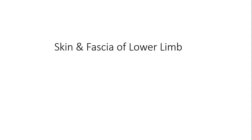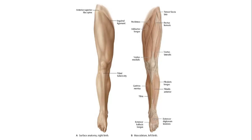The skeletal system will be discussed by another teacher. I am here to discuss the skin and fascia of the lower limb. The skin of the lower limb is similar to other parts of the body, but at certain points it is different. At the sole of the foot it is much harder and thicker compared to other parts of the body, and at some places the skin is very adherent to the bones where you can feel them.